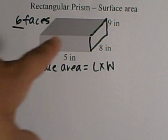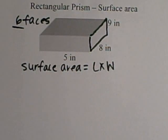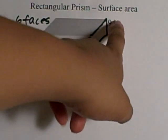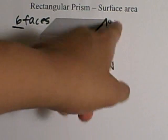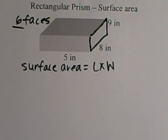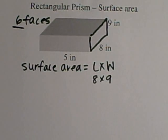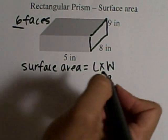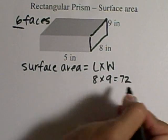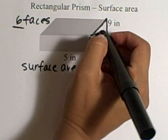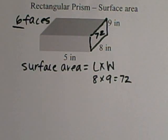Now, if I look here, we're going to start with this face here. This face, I would say my length is 8 and my width is 9. So we're going to start by doing 8 times 9, and 8 times 9 is 72. So I now know that this face is 72.